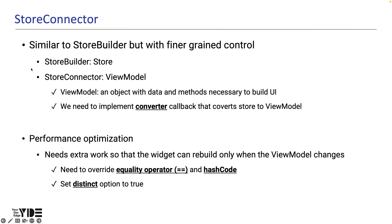Even if the widget is wrapped with the StoreConnector, the widget will rebuild whenever the store changes, so there doesn't seem to be much benefit to using StoreConnector. That's why StoreConnector can be made to rebuild only when the view model changes properties for performance optimization, reducing unnecessary rebuilds. To use this performance optimization, you need to override the equality operator and hashCode of the view model and set the distinct option of StoreConnector to true.